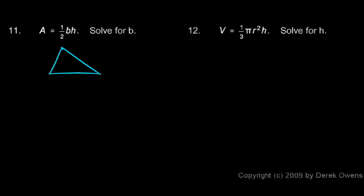If you have a triangle with height h and a base b, then the area is 1 half bh.